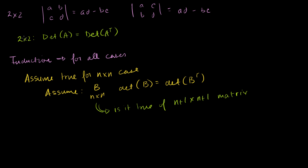So if it's true for the 2×2 case, it'll be true for the 3×3 case, because that's just one increment. If it's true for the 3×3 case, it'll be true for the 4×4 case. If it's true for the 4×4 case, it'll be true for the 5×5 case, and you just keep going up. So in a proof by induction, you prove a base case, and then you prove that if it's true for an n×n determinant, it's going to be true for an n+1 by n+1 determinant. Then you have completed your proof.